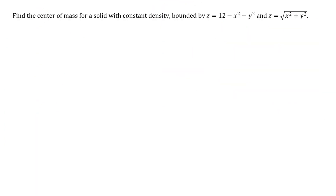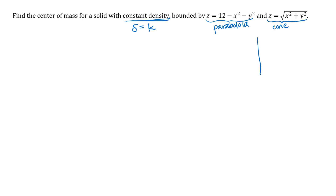We're going to find the center of mass for a solid with constant density — I'll use k for that constant. The solid is bounded by two surfaces. The first equation is a paraboloid with vertex at 12 that opens downward. The second is the top half of a cone opening upward, where the sides are z equals plus or minus x and z equals plus or minus y — 45-degree angles with the coordinate axes.